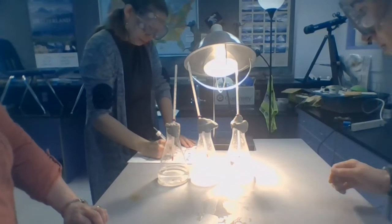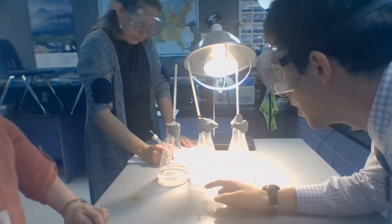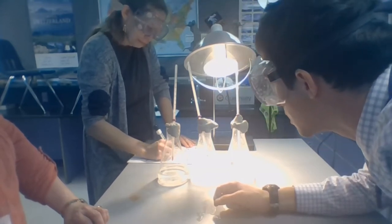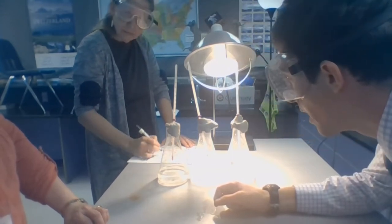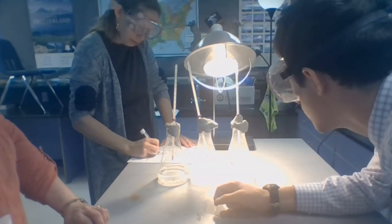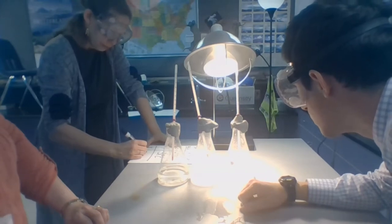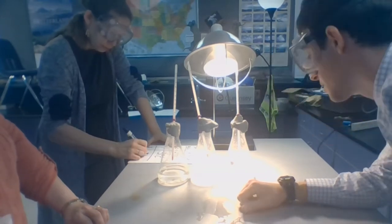All right, now we're at six minutes. For the zero Alka-Seltzers, we're at 27 degrees Celsius. For the four Alka-Seltzers, we're at 31 degrees Celsius. And for the eight Alka-Seltzers, we have 28 degrees Celsius.